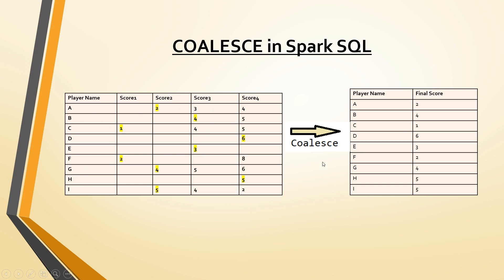When we apply the coalesce function, for player A the first non-null score is 2 — you can see 2 here. For player B, the first non-null is 4. For C it's 1, for D it's 6, for E it's 3, for F it's 2, for G it's 4, for H it's 5, and for I it's 5. So you have to consider only the first non-null value from the dataset.